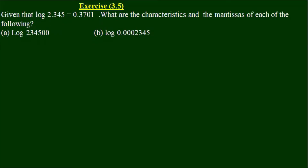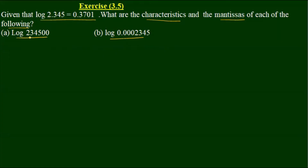Exercise 3.5a, number one. Given that log 2.345 equals 0.3701, what are the characteristics of each of the following? This is the problem — find the characteristics of each of the following. It is given that log 2.345 equals 0.3701.